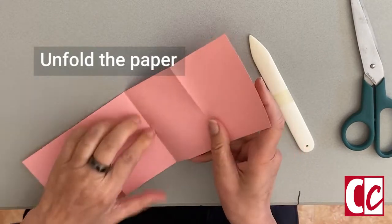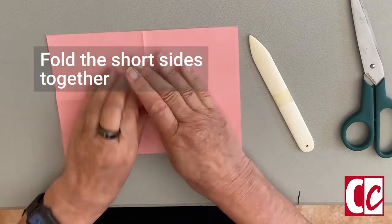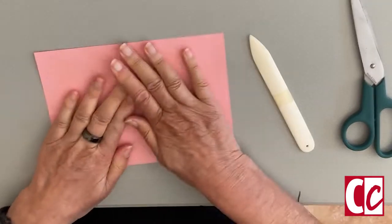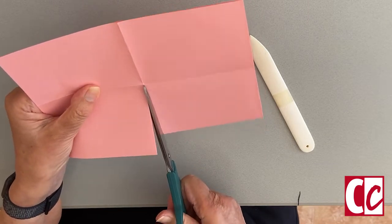Unfold the paper and fold it again, but this time on the short side. And cut the center line halfway.